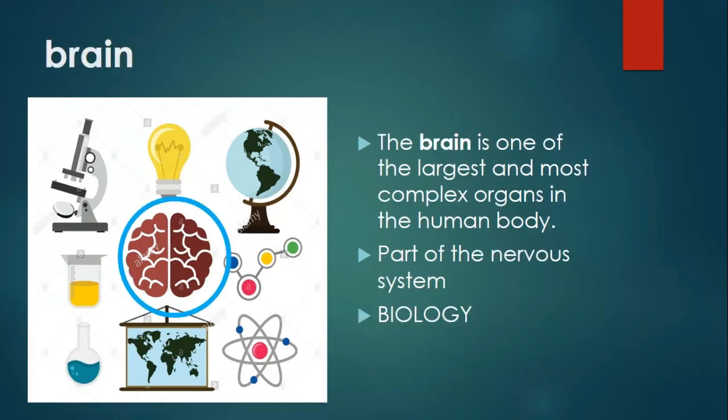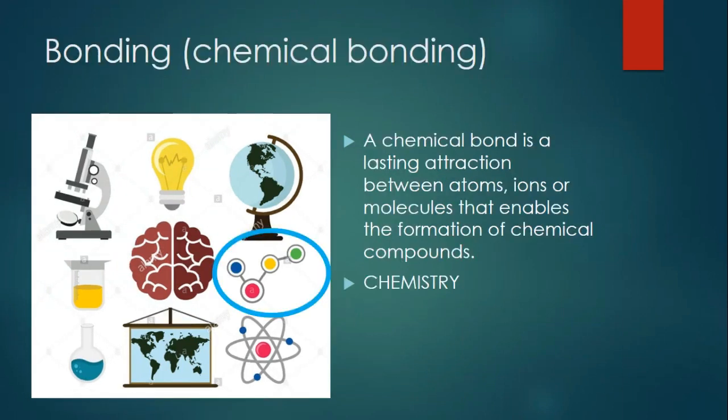Next one is the brain. The brain is one of the largest and the most complex organs in the human body. The brain is part of our nervous system. And the brain is divided into three main parts: the cerebrum, the cerebellum, and the brainstem. This will be discussed in your biology.